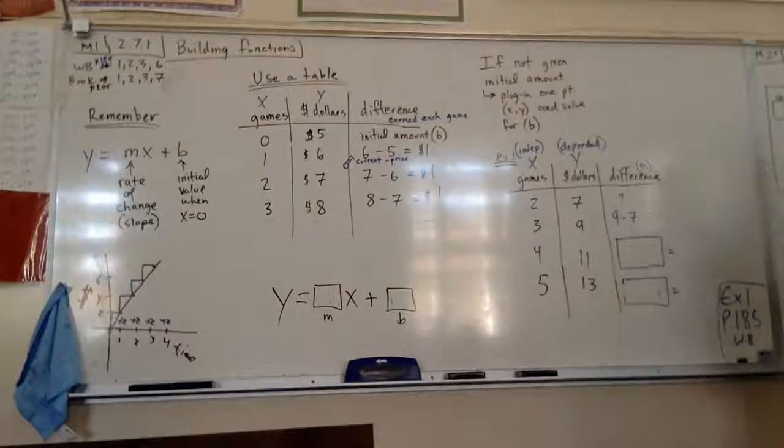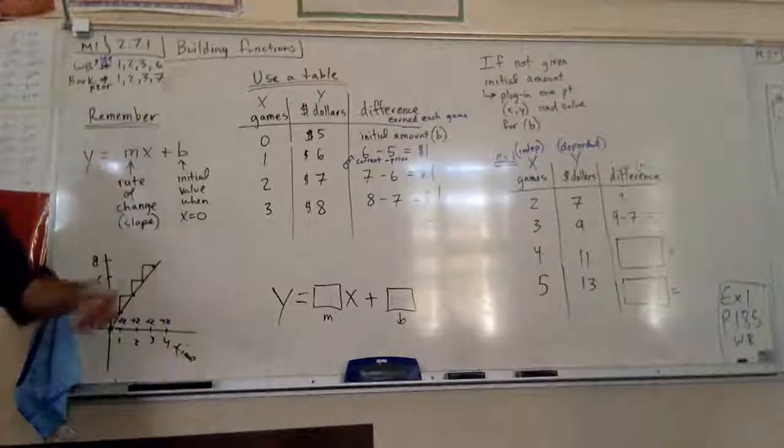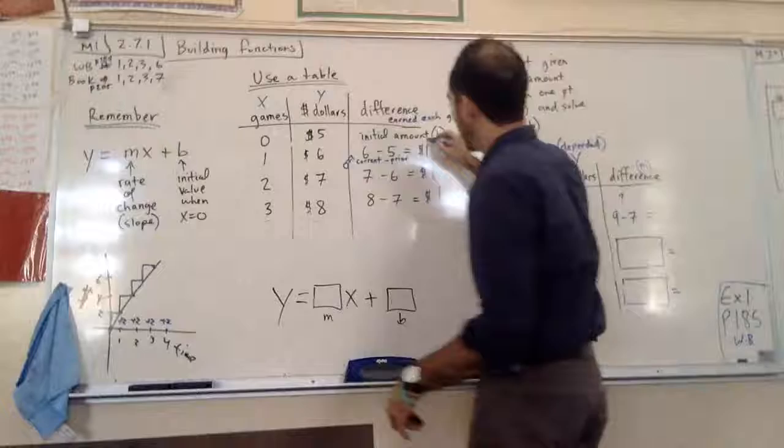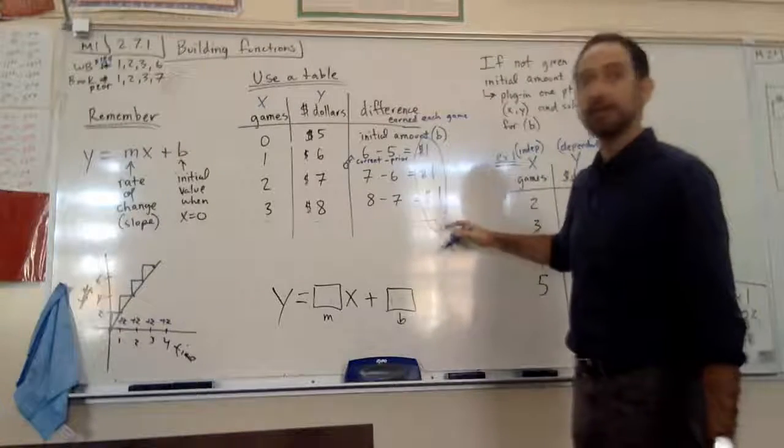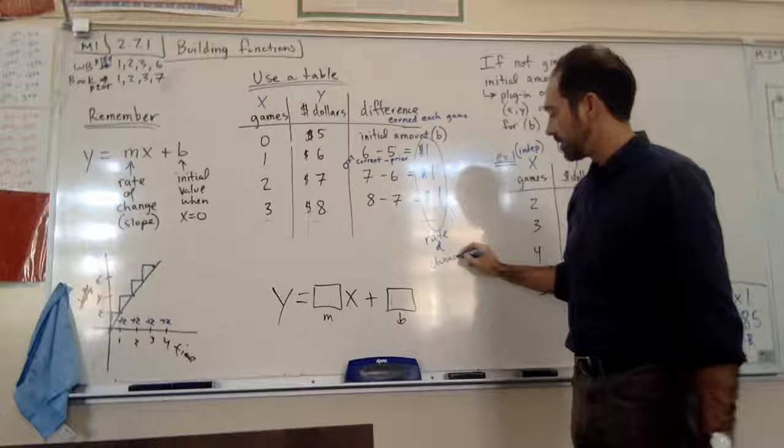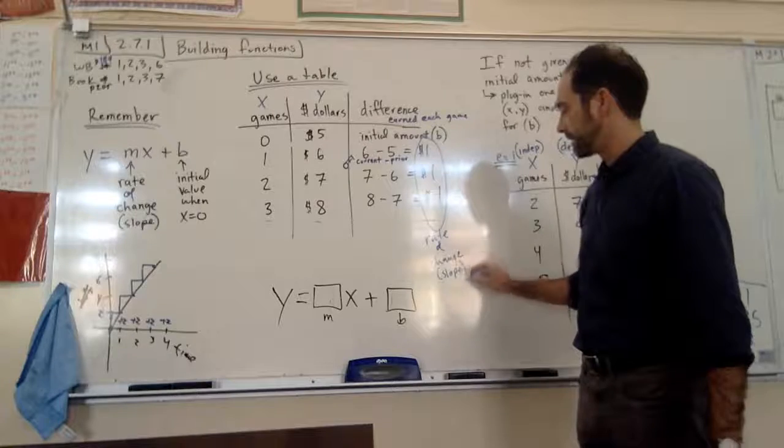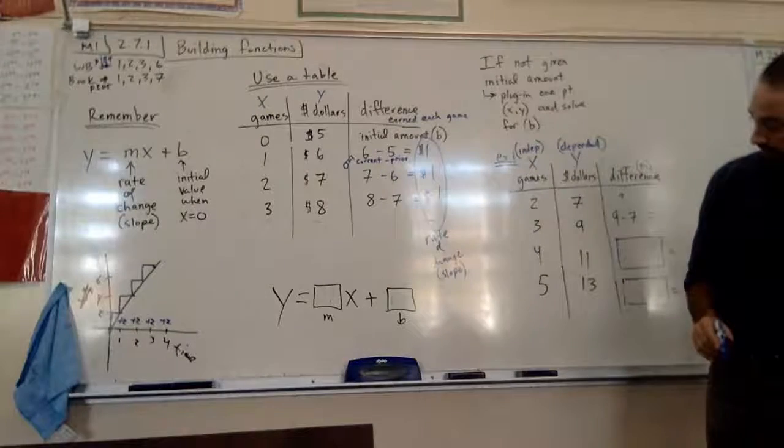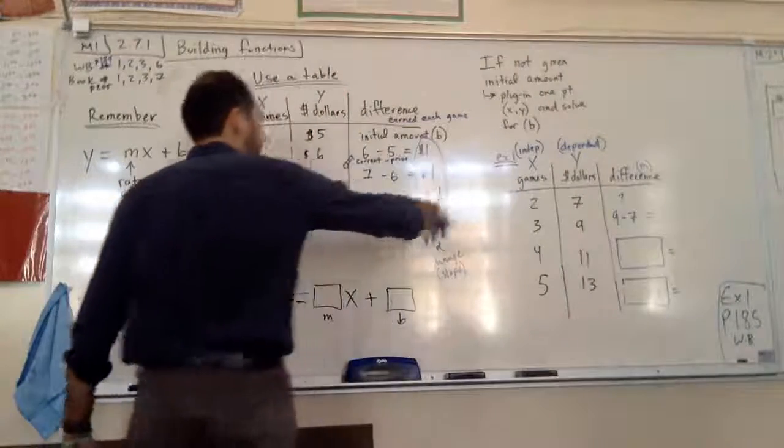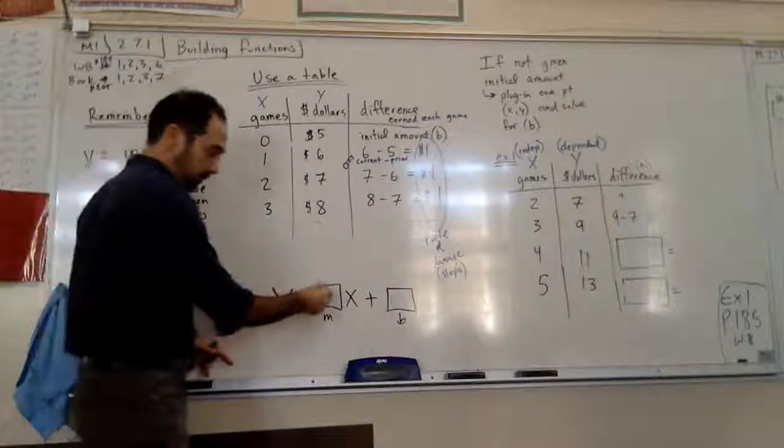After the third game, you have eight bucks. You started with seven after the second game, so it's eight minus seven. What is that? One dollar. Do you see something consistent? Just like my allowance over here, the steps are the same, right? What are the steps going to be in this? How much do you earn each unit of time? One dollar.